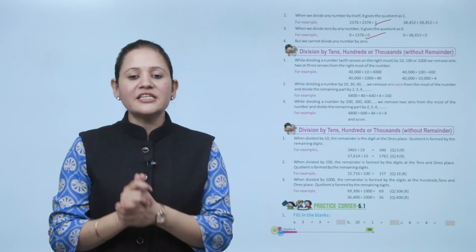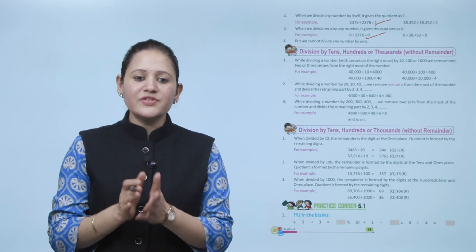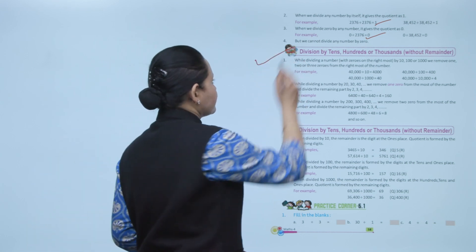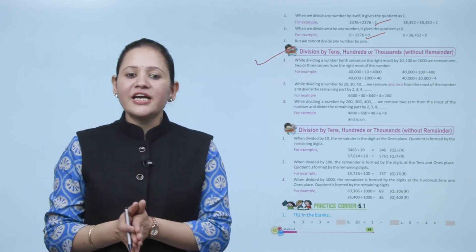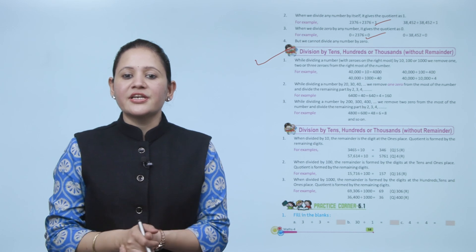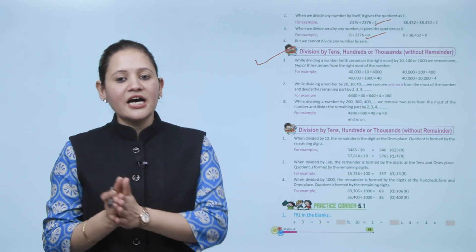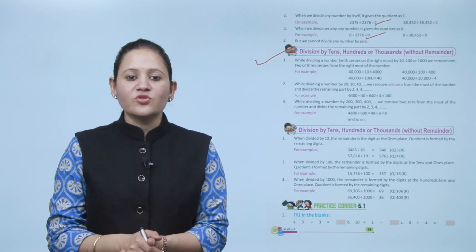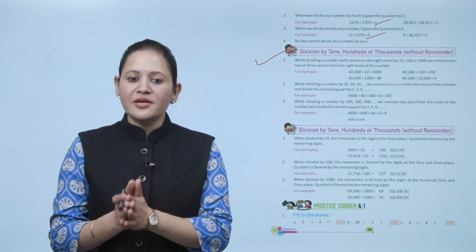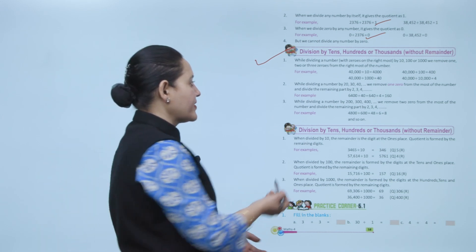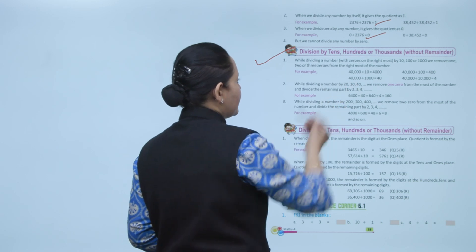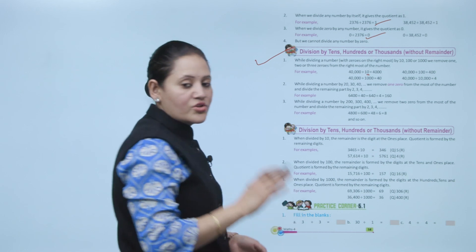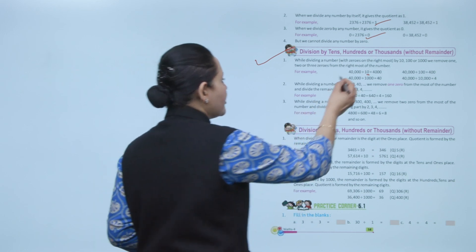Next is division of tens, hundreds, or thousands without remainder. While dividing a number with zeros on the rightmost by 10, 100, or 1000, we remove 1, 2, or 3 zeros from the rightmost of the number. For example, 40,000 divided by 10 — since the divisor has one zero, we remove one zero from the right. The answer is 4000.